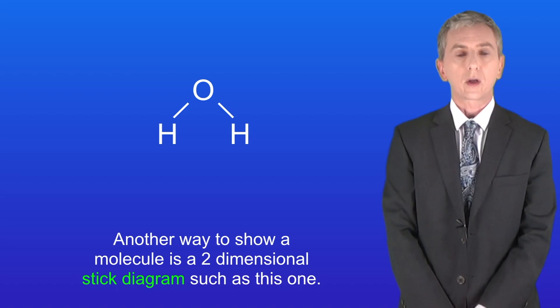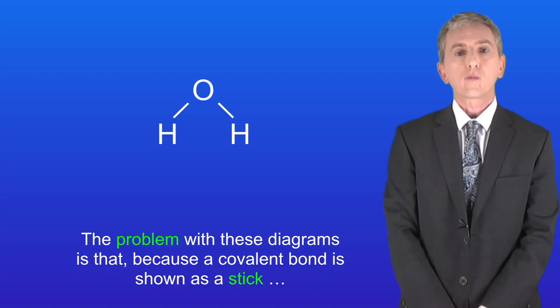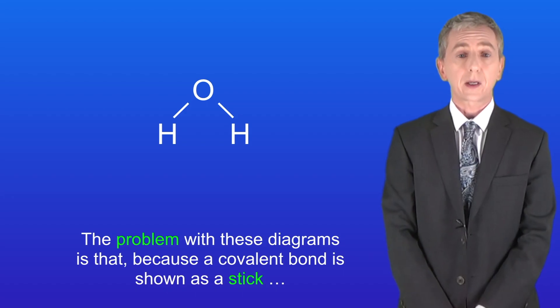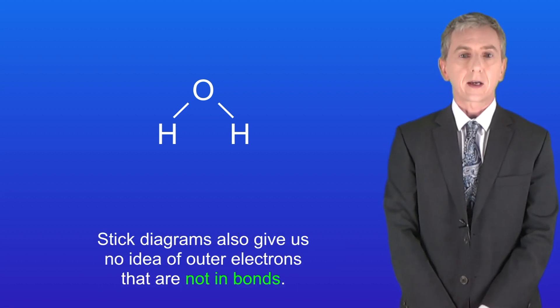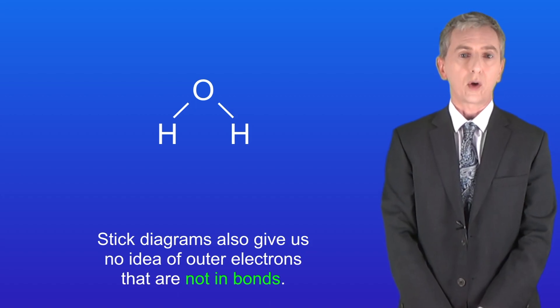Another way to show a molecule is a two-dimensional stick diagram such as this one. The problem with these diagrams is that because a covalent bond is shown as a stick, we cannot tell which electron in the bond came from which atom. Stick diagrams also give us no idea of outer electrons that are not in bonds.